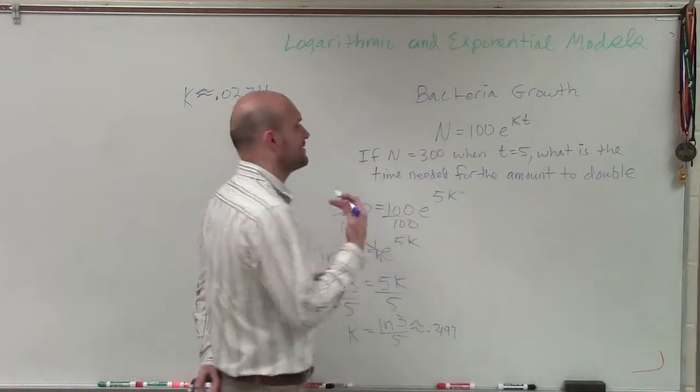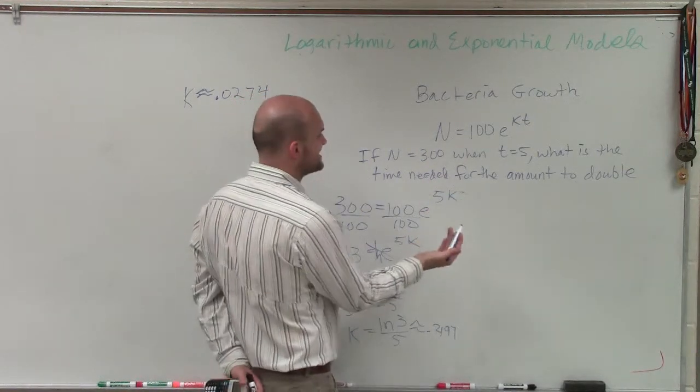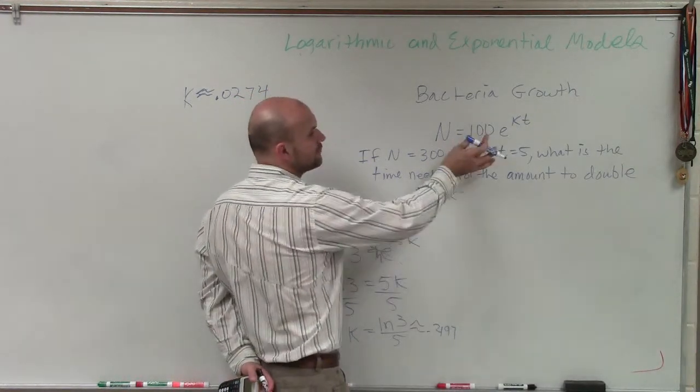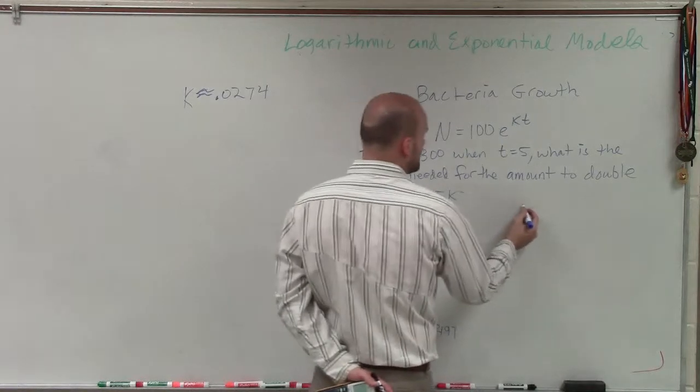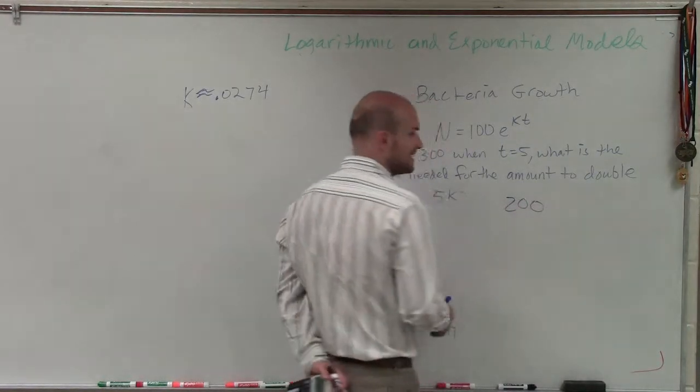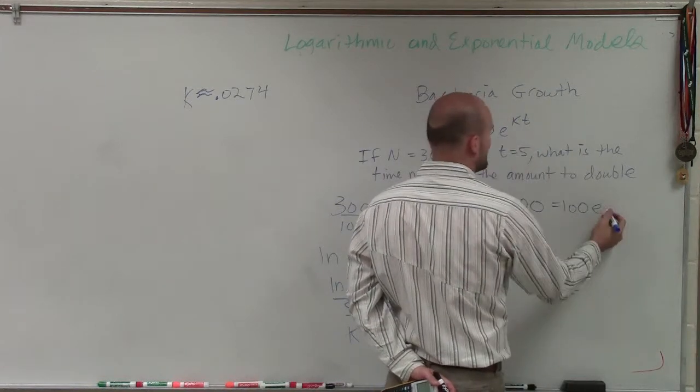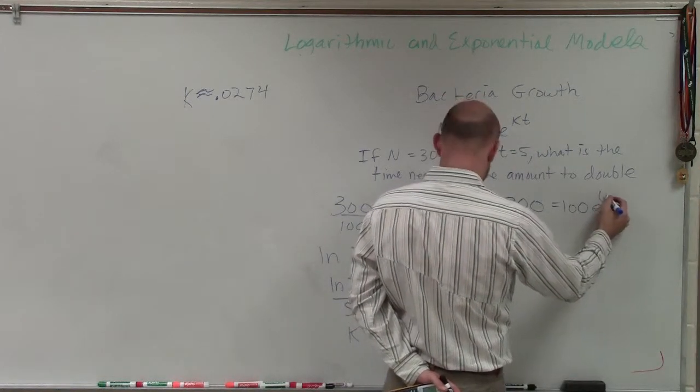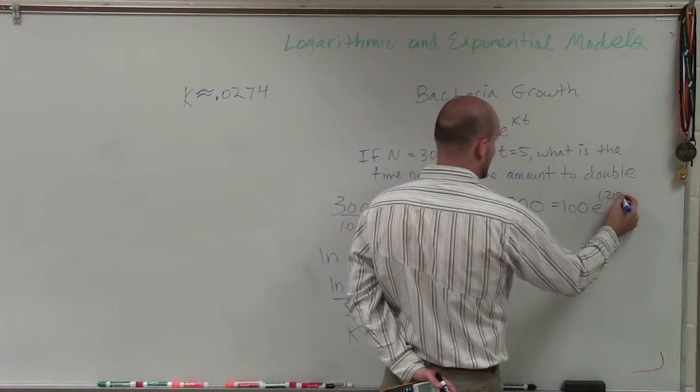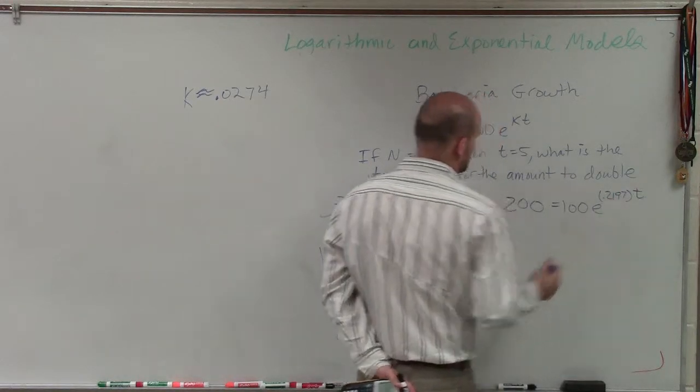But now they're asking us for what is the amount of time. So we need to figure out what t is going to be for our amount to double. So if we start with the amount of 100, we want to double it. That means we want to get it to 200 equals 100e to the k, which we now know is that approximate value 0.2197 times t.